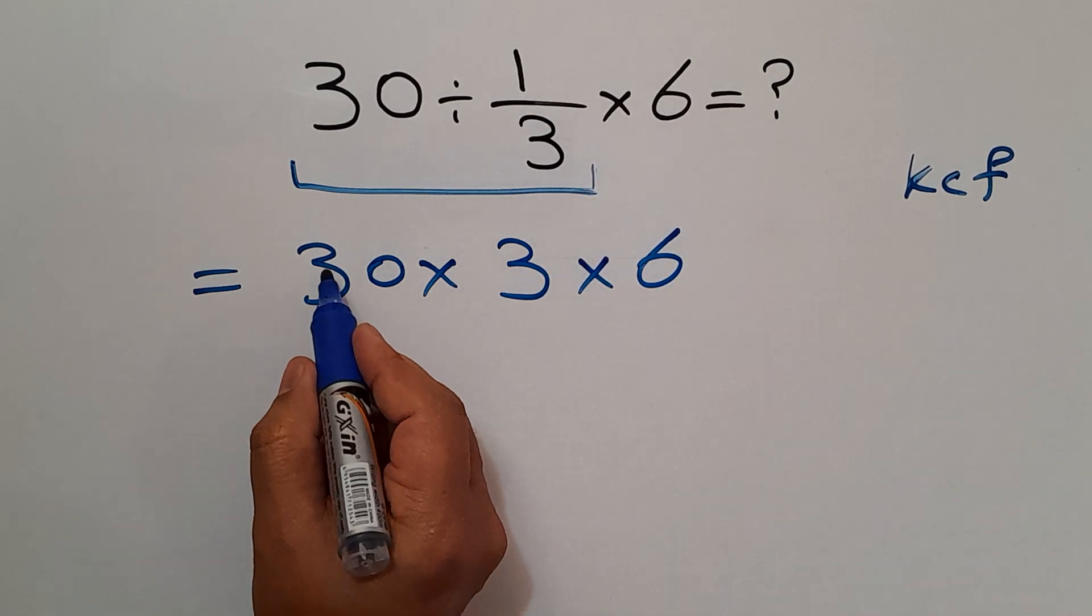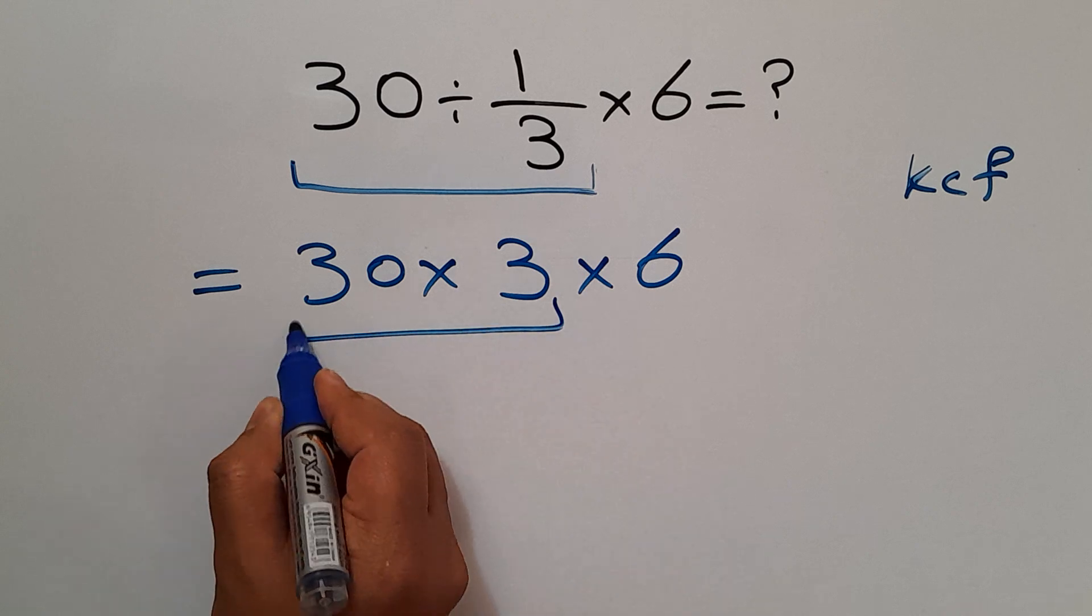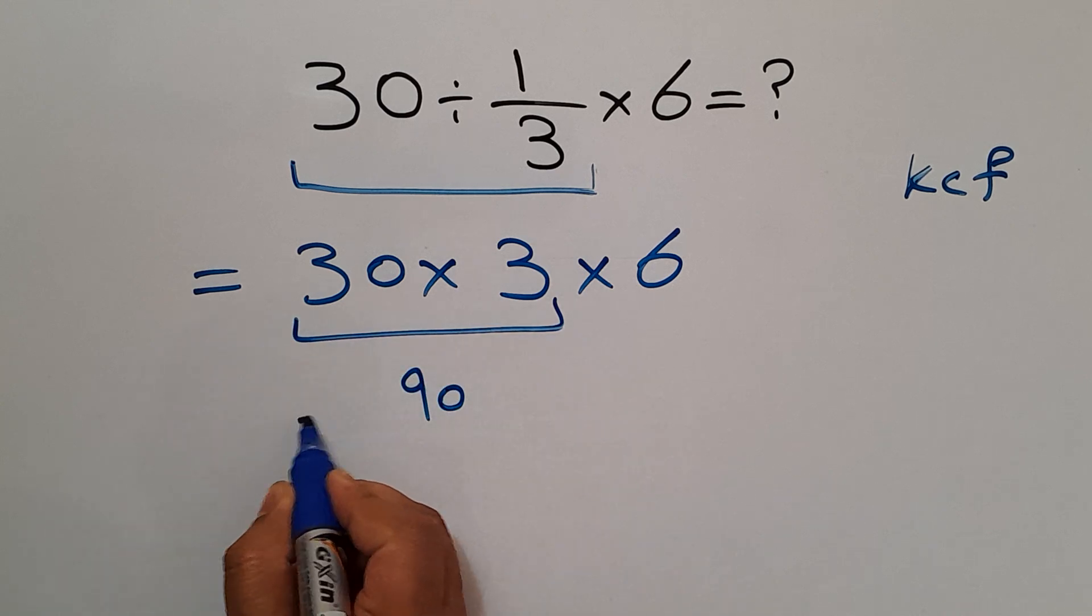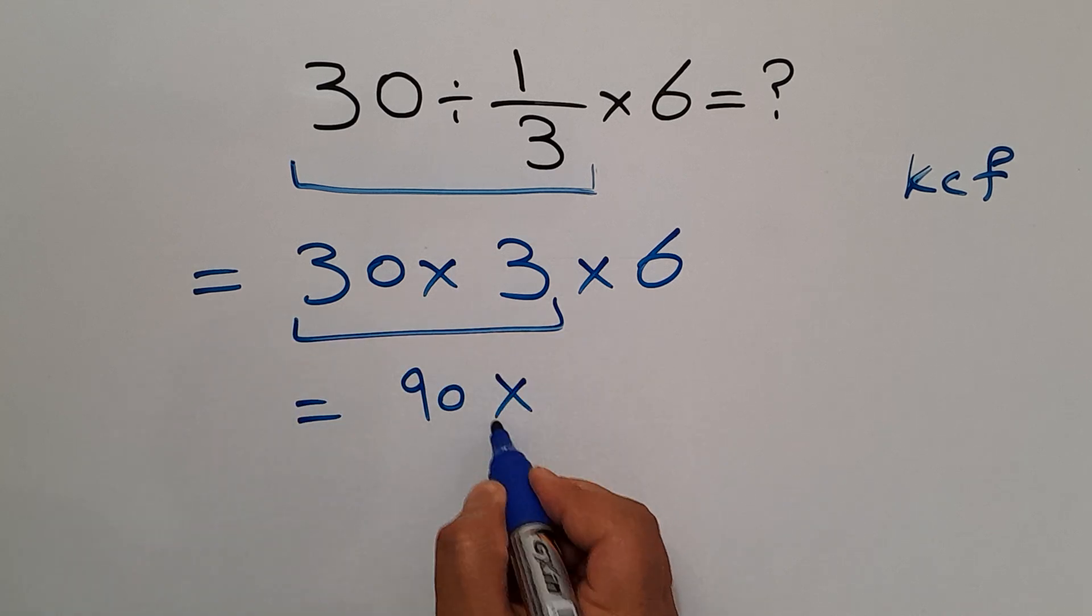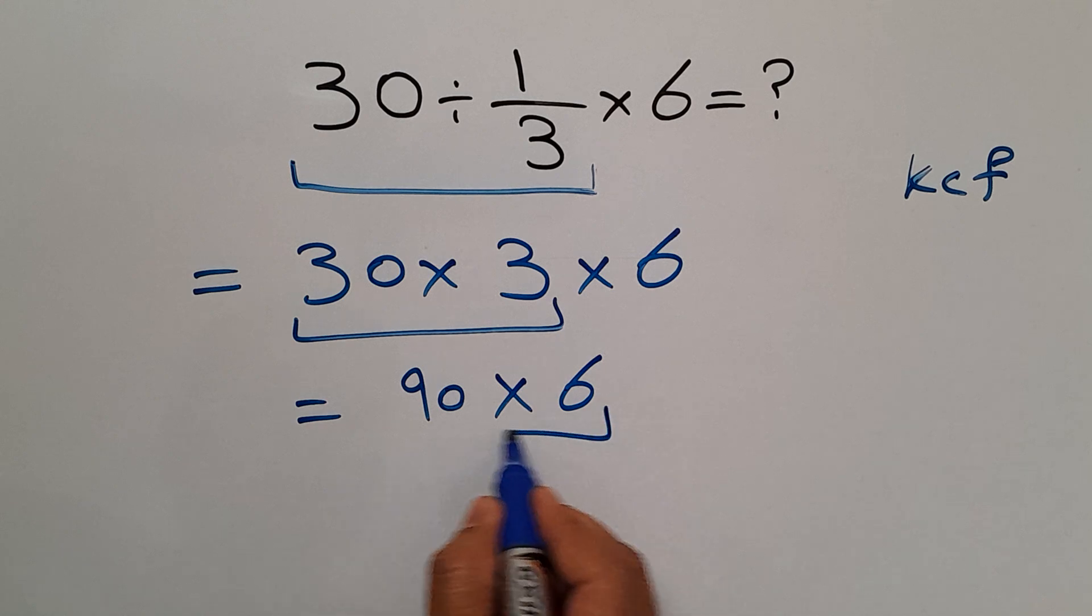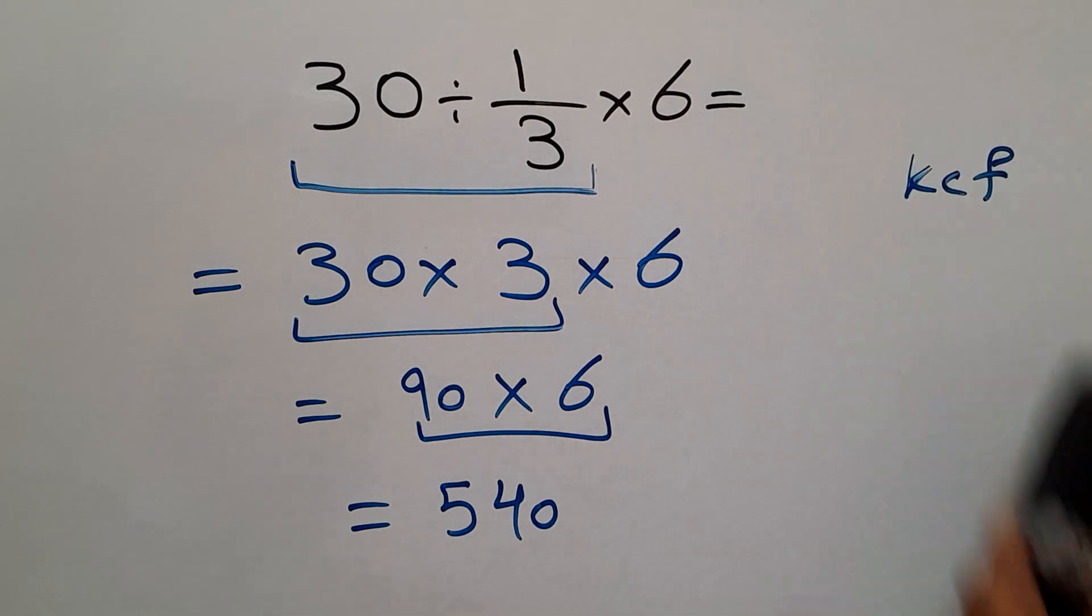Now, 30 times 3 gives us 90. So 90 times 6, and this is equal to 540. Our final answer to this problem is 540.